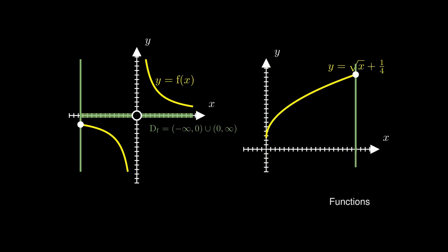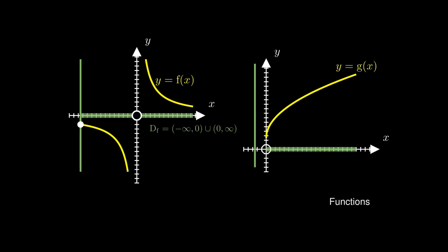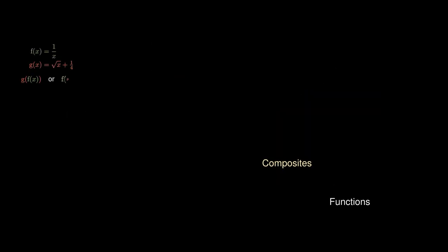Likewise, for the function square root of x plus one quarter, we obtain a domain corresponding to the non-negative real numbers. We can also check for output values; in the case of function f, its output values, known as the range, are denoted by R sub f. For function g, its range is the real numbers not smaller than a quarter, denoted by R sub g. A really useful operation is to plug one function into another, but how do we know which is a legitimate operation?